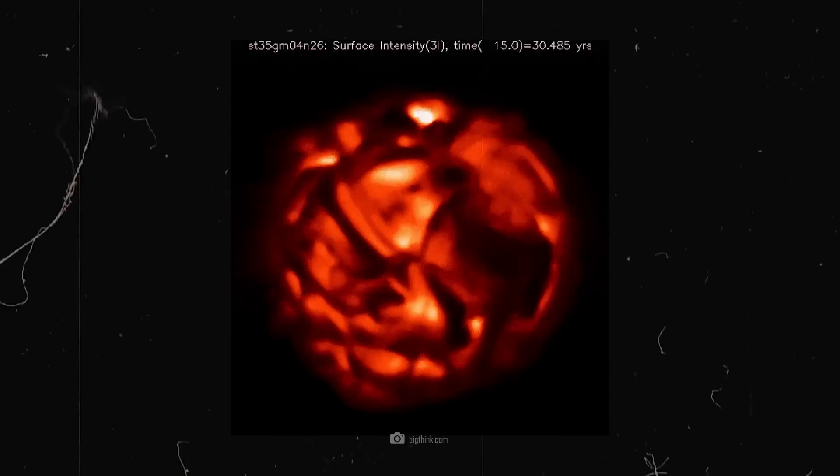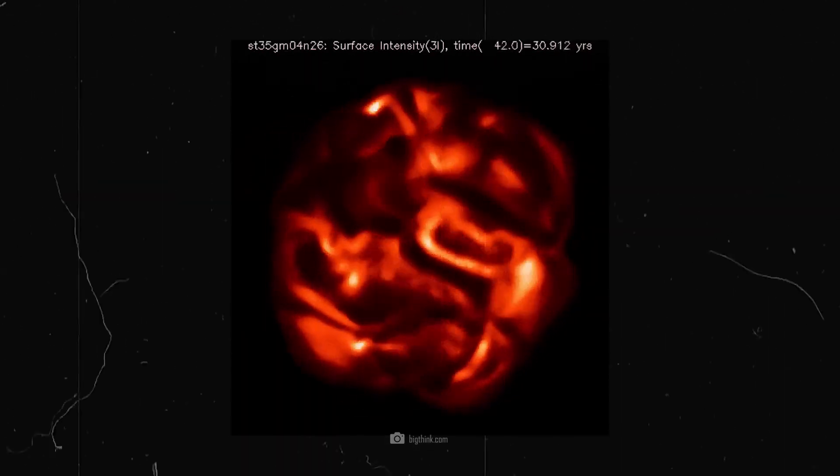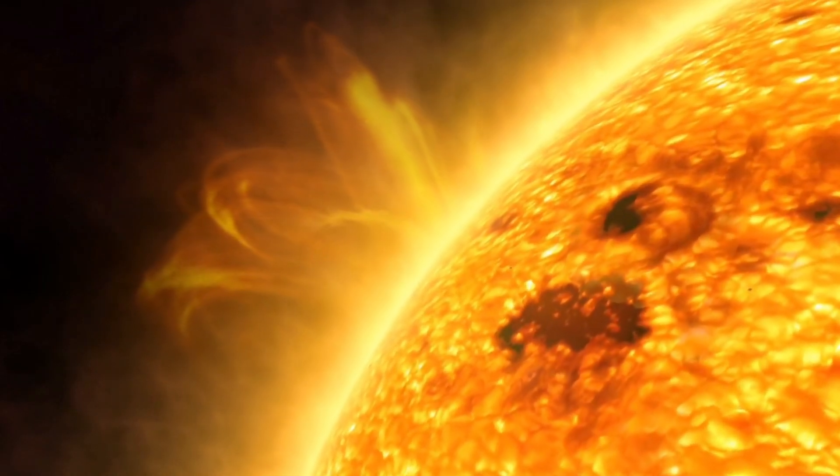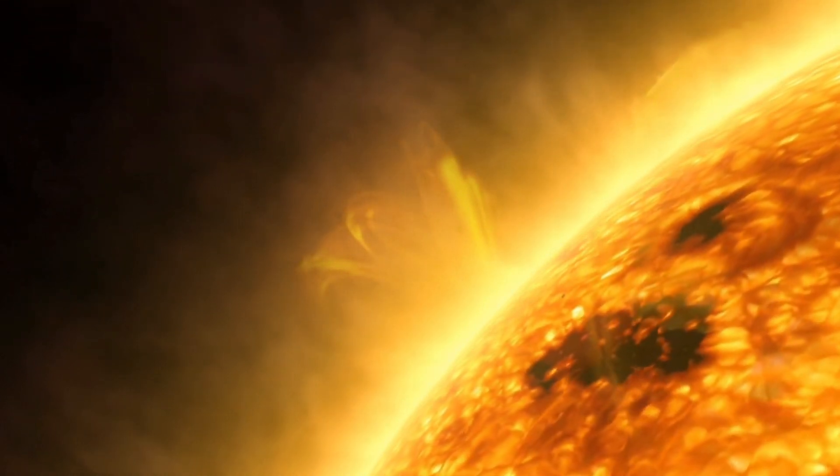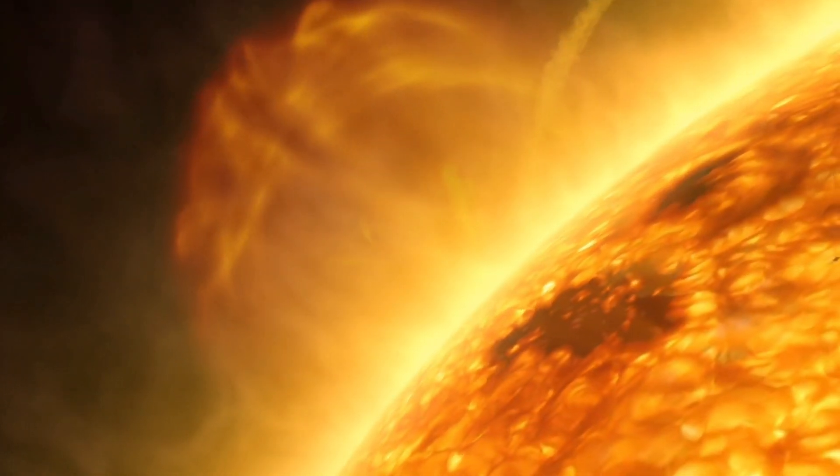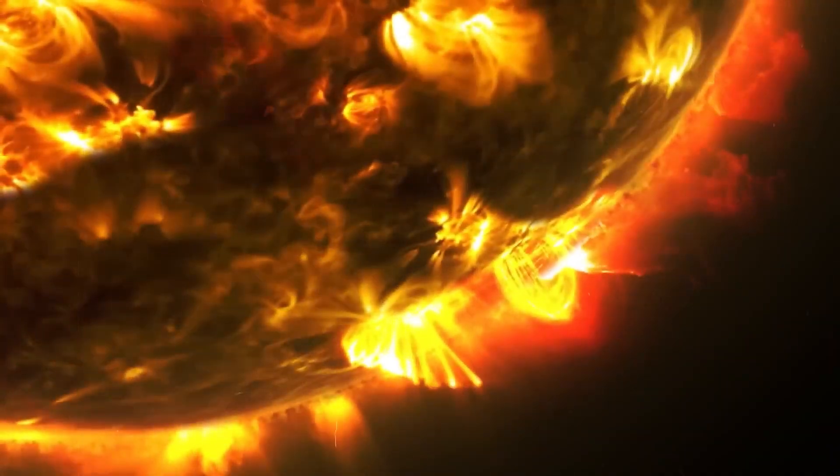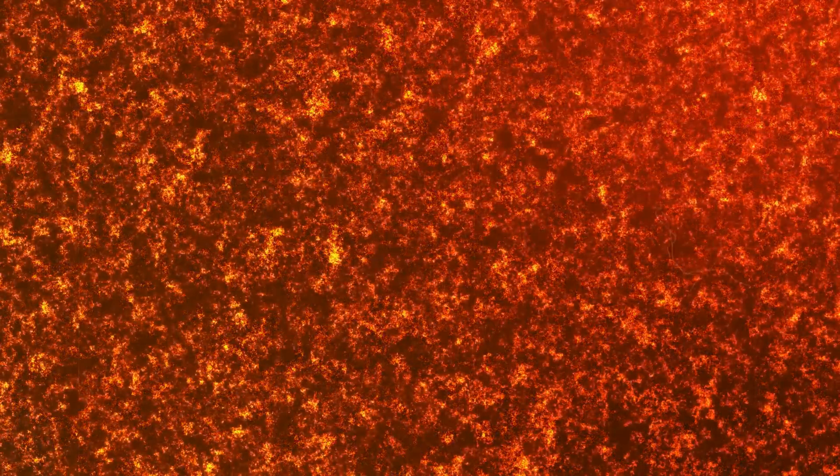The first stars were therefore also very light supergiants with a very short lifespan. Within this short span of existence, the giant stars converted hydrogen into helium. This nuclear fusion released enormous amounts of energy, which made the stars shine.